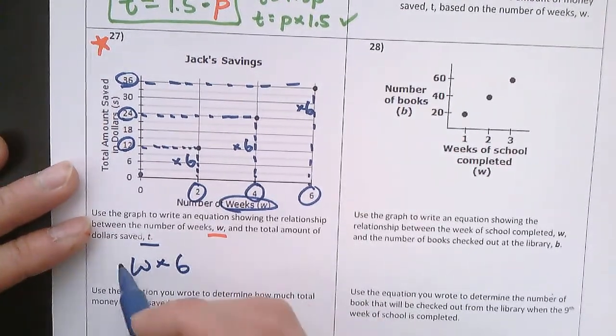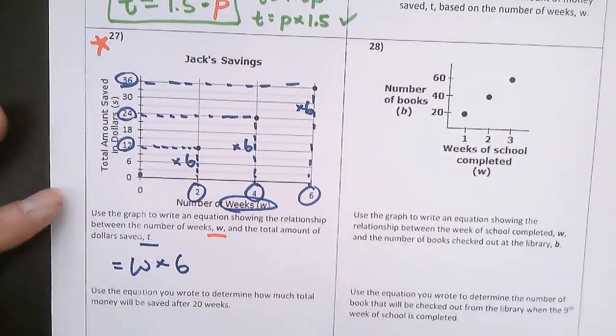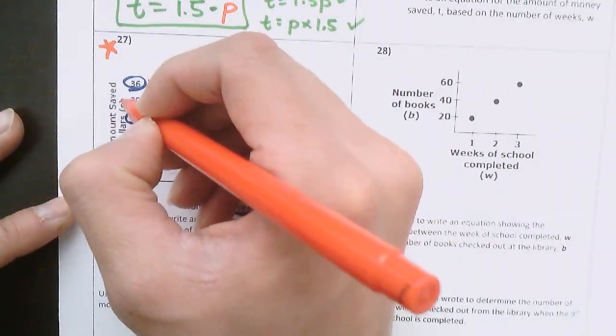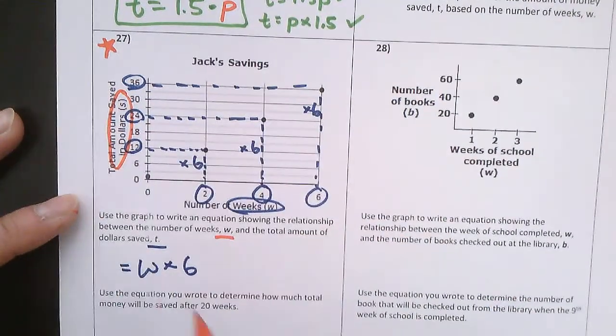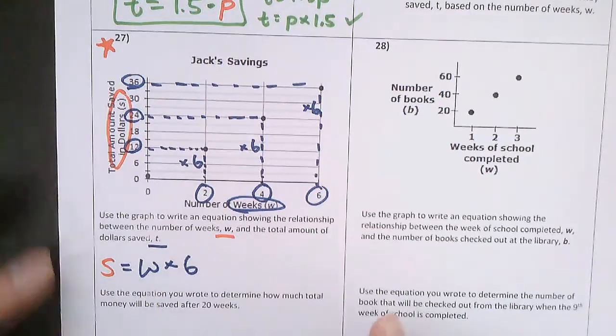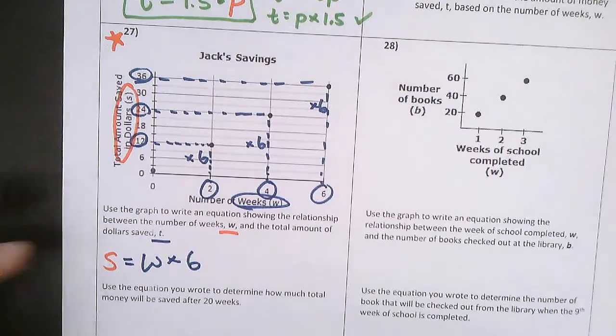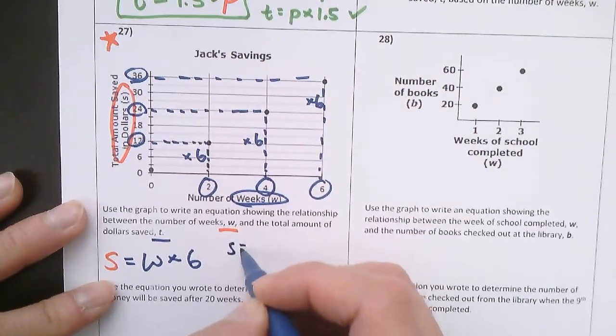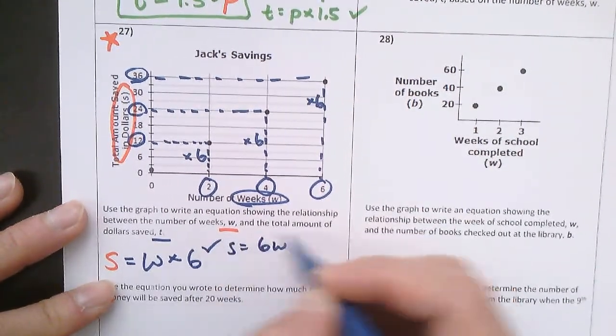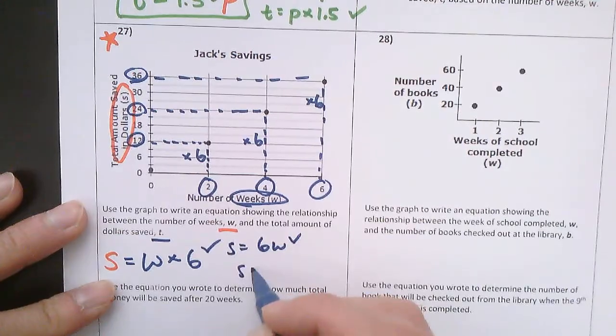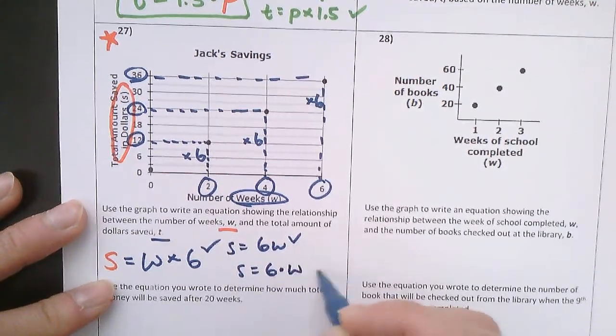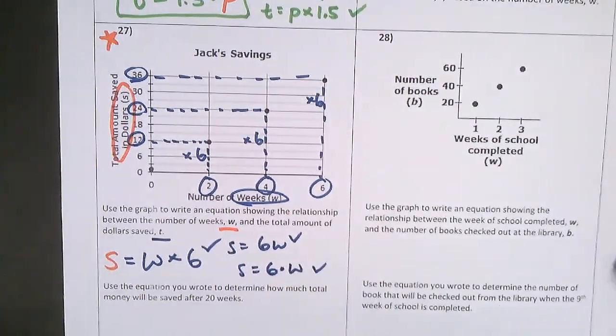And that is what is getting me to my total dollars saved, which is S. So the total dollars saved, S, is equal to whatever the weeks is times 6. You could have also written this as S equals 6W, that works. Or S equals 6 times W. All of these answers are correct.